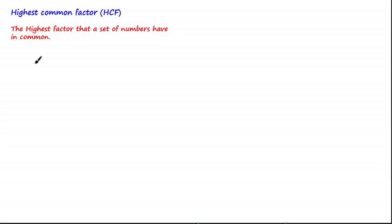In the previous tutorial we learnt how to find factors of a number. In general, you'll be given a set of numbers — most of the time two numbers — and you'll be asked to find the highest common factor between them. A method you can use is to list all the factors of each respective number, and out of all the common factors between each number, choose the highest common factor.